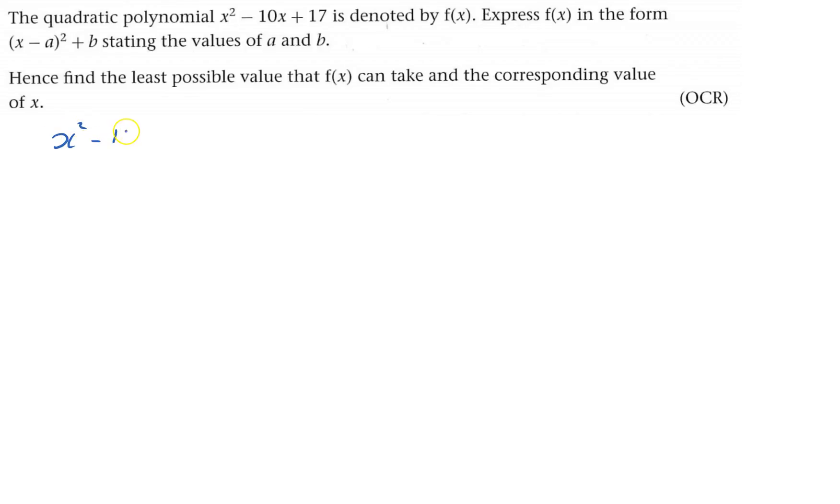So we start off with x squared minus 10x plus 17, and I want to write it down as a squared expression, and I have to complete it by adding or subtracting something at the end.